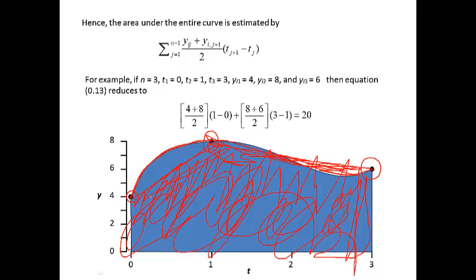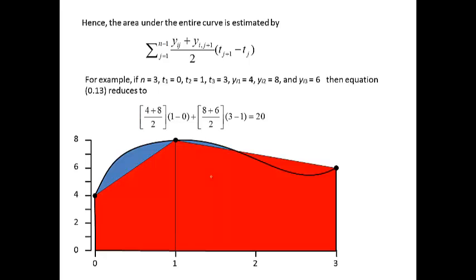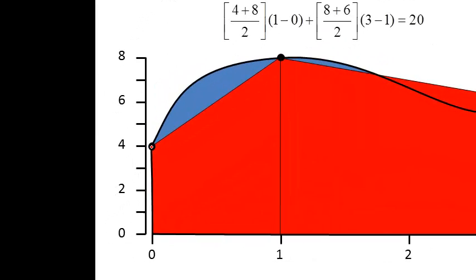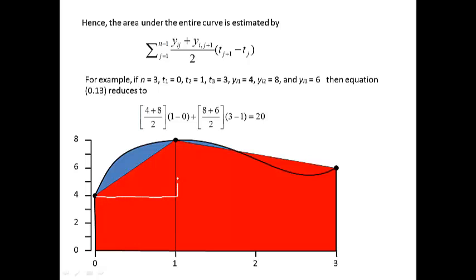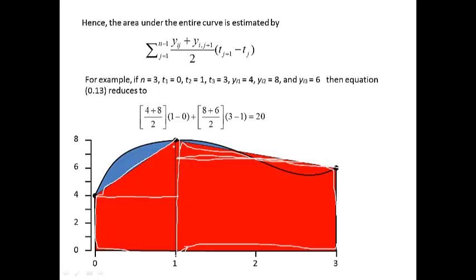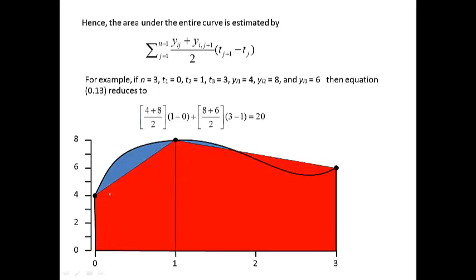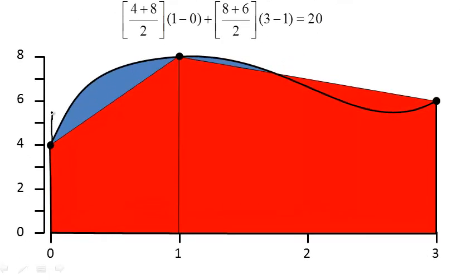Since we don't have nonlinear measurements, all we have is connecting straight lines, and this is the area under the curve we are going to compute. To compute it, you might think we have to calculate this triangle, then this triangle, and then this triangle — and that seems like too much. But don't worry, there is an easy way: calculate each triangle and rectangle separately, and what we actually do is compute the rectangle area.